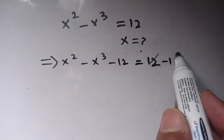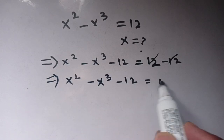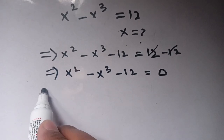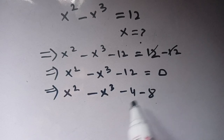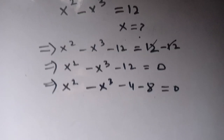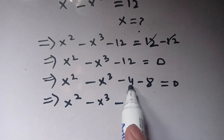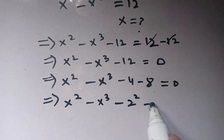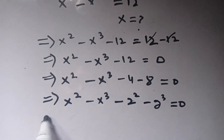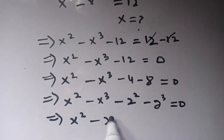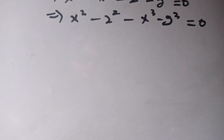Our right hand side will become equal to 0, so our left hand side becomes x squared minus x cubed minus 12 is equal to 0. In the next step, we can write minus 12 as minus 4 and minus 8, since minus 4 and minus 8 equals minus 12. We then rewrite: x squared minus x cubed minus 4 can be written in terms of 2 squared, and minus 8 can be written as 2 cubed, so we have x squared minus 2 squared minus x cubed minus 2 cubed is equal to 0.